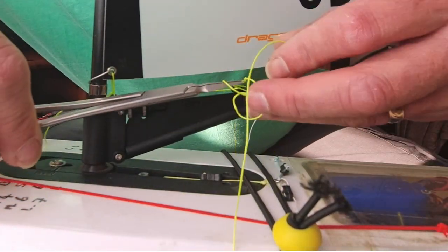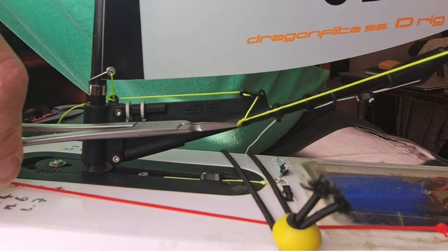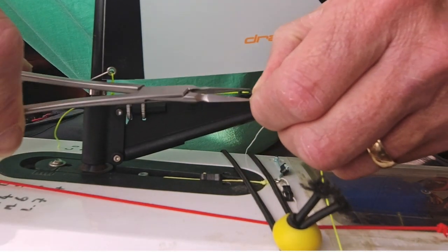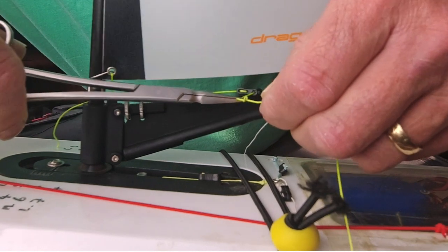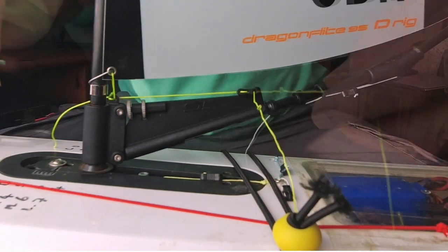It may be necessary to tie a second knot on top of the first to make sure it's big enough to block the bowzie hole because if the knot is too small it will pull through the bowzie hole when under tension.